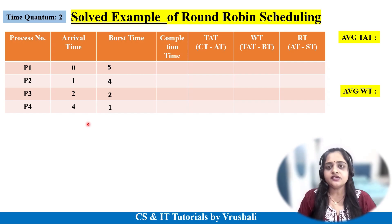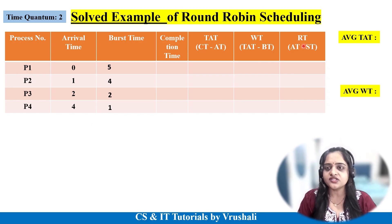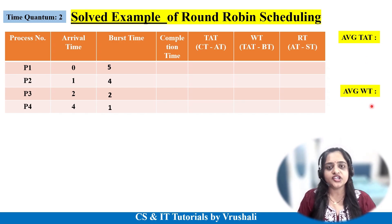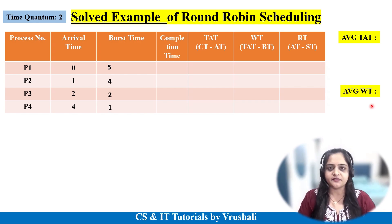You need to find out: completion time, turnaround time, waiting time, response time, then average turnaround time and average waiting time. This kind of question will be asked for 8 to 9 marks in your exam.